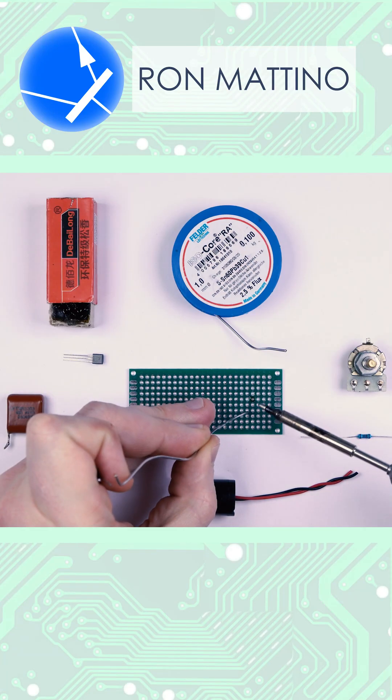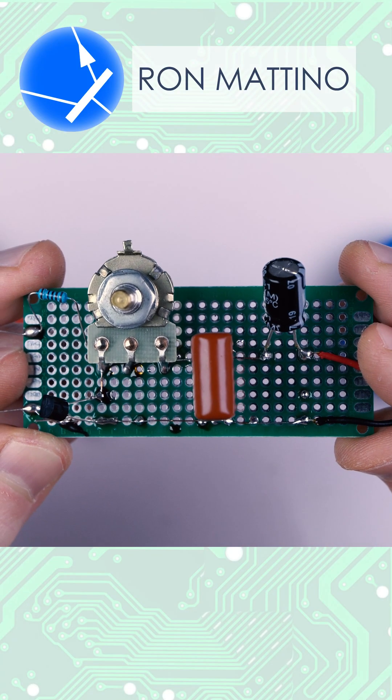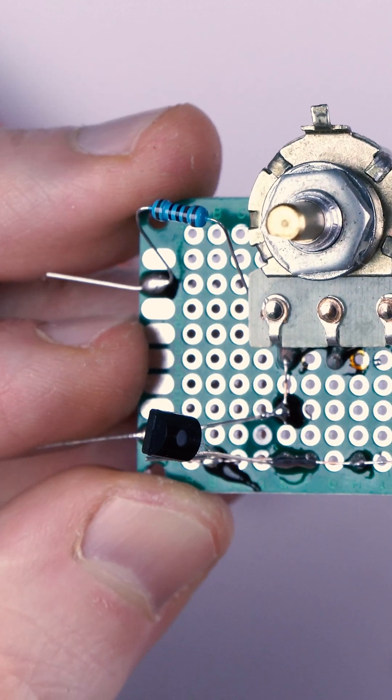I bet you've heard that you can't build an oscillator using a single BJT transistor. Well, that's not exactly true.